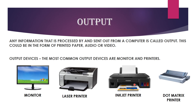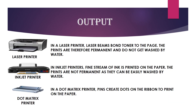The next output device is the printer — a hardware device attached to a computer for printing text or pictures. There are different types of printers: laser printer, inkjet printer, and dot matrix printer. In a laser printer, laser beams bond toner to the page, meaning the ink gets printed using laser beams. The prints are permanent and do not get washed by water. In inkjet printers, a fine stream of ink is printed on the paper, but the prints are not permanent as they can be washed by water. In a dot matrix printer, pins create dots on a ribbon to print on the paper.